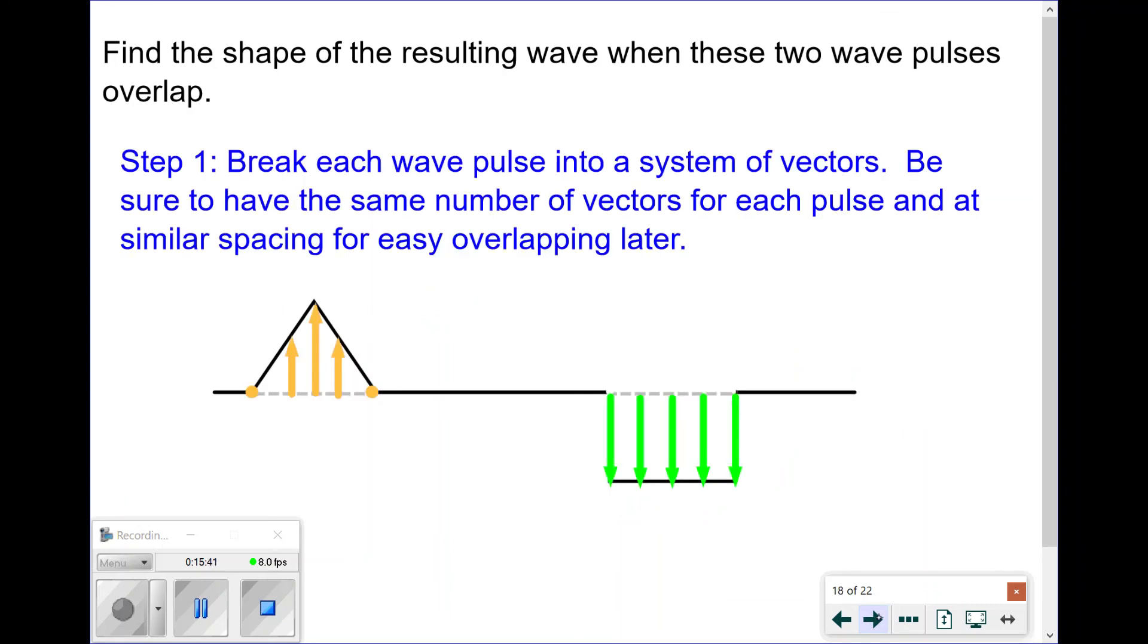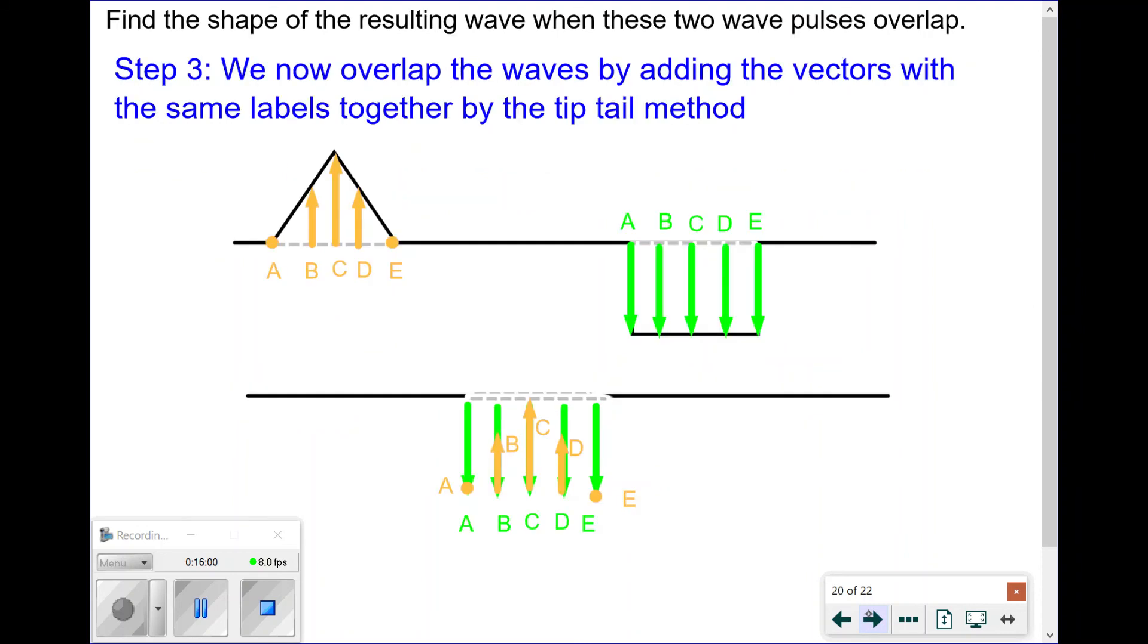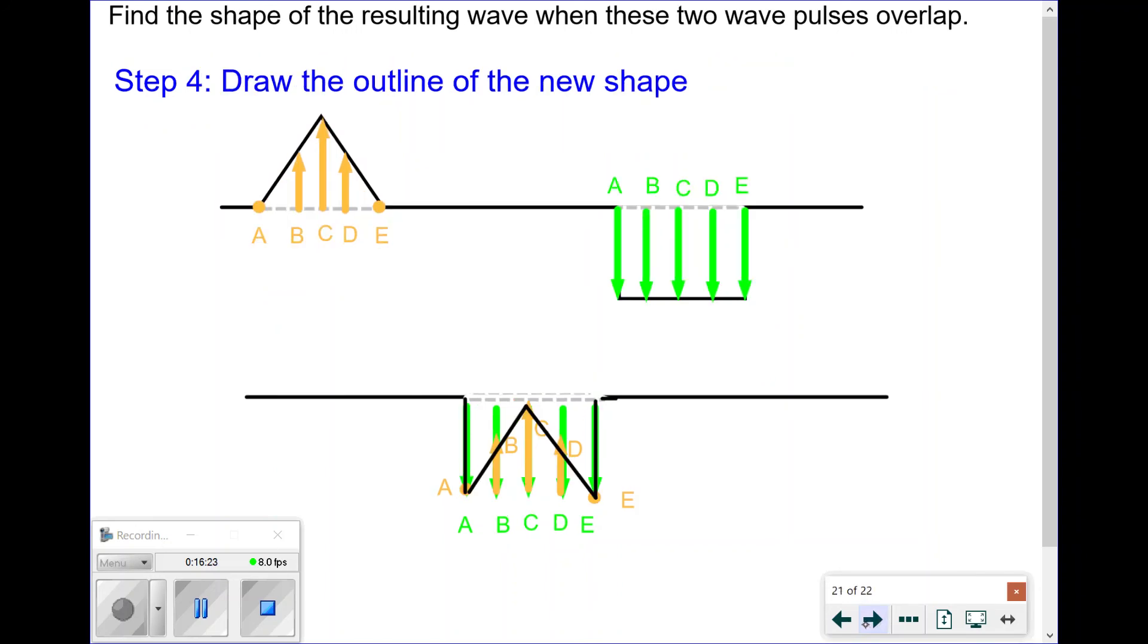So again, I'm going to simply break these guys up into multiple vectors. You get to pick how many you need. I'm going to label them A, B, C, D, E on both sides. And we now can add tip to tail, A to A's, B to B's, C to C's, D to D's, E's to E's. If you notice in this case, since they go in opposite directions, I'm going to actually have something that's going to go down to this point here, then move up to the baseline, and then back down. So this is my wave shape.